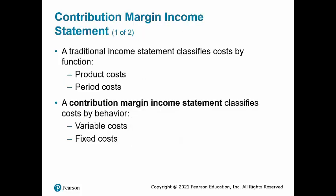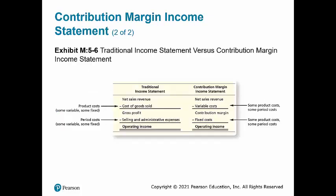The traditional income statement format learned in Principles 1 does not always provide enough information for managers, so another format is used. A contribution margin income statement classifies costs by behavior — that is, costs are classified either as variable or fixed. The contribution margin income statement highlights contribution margin, which is net sales less variable cost. This slide compares the traditional income statement required by GAAP to the contribution margin income statement.